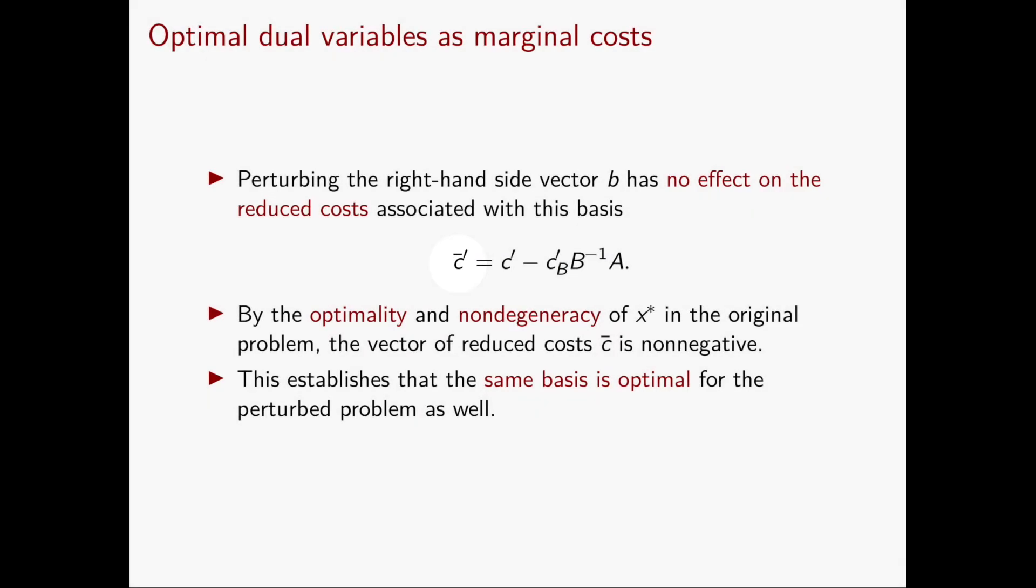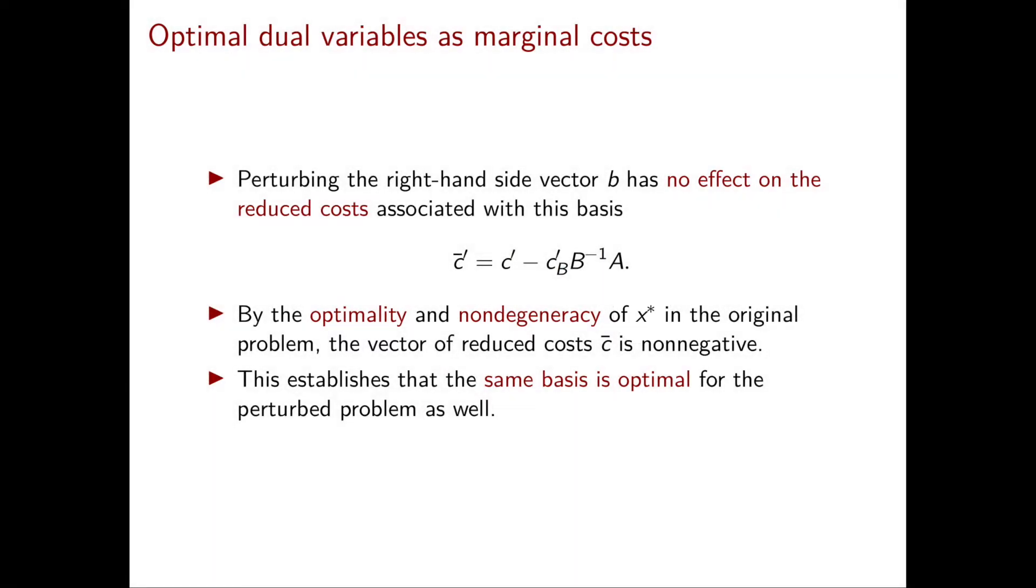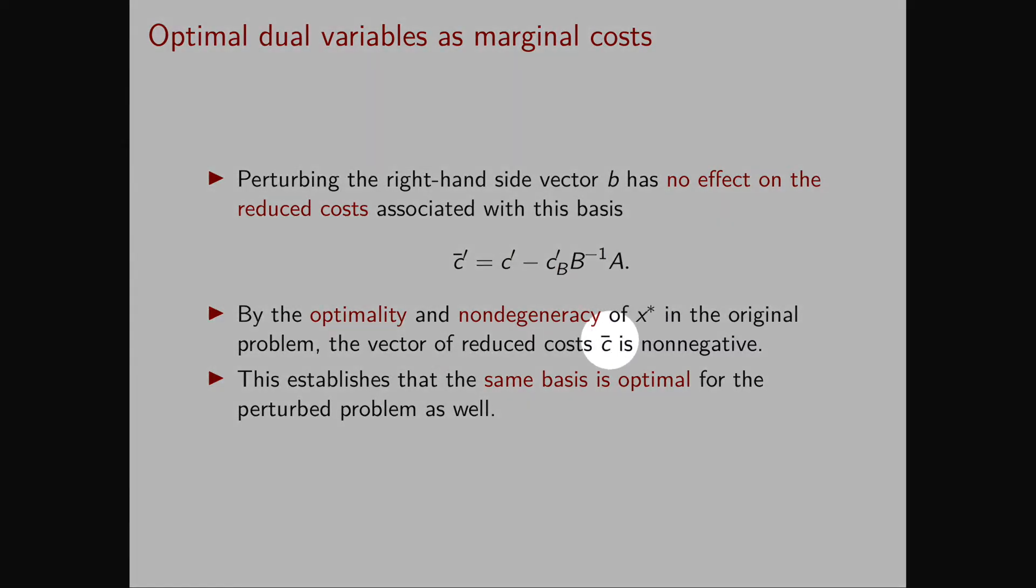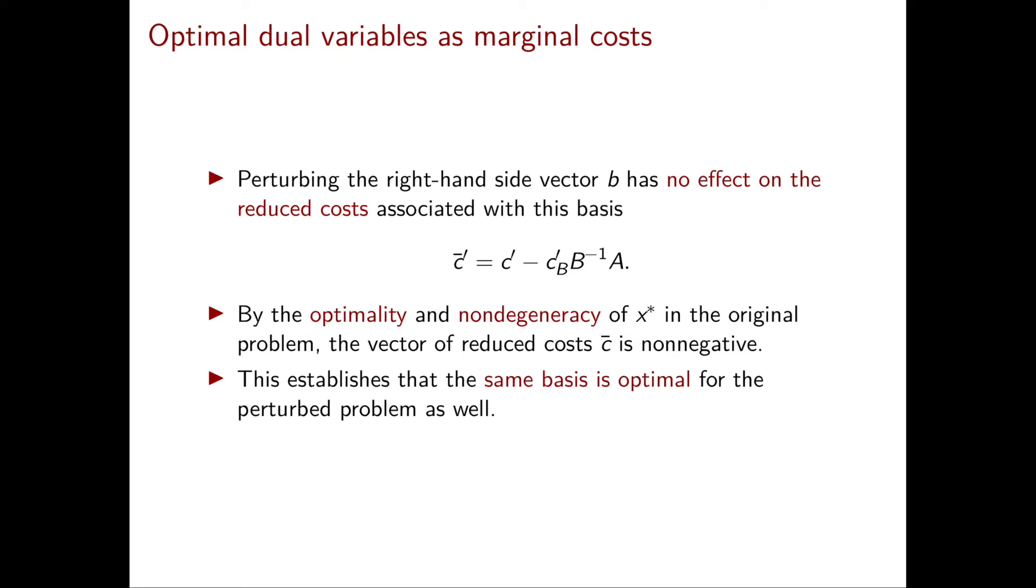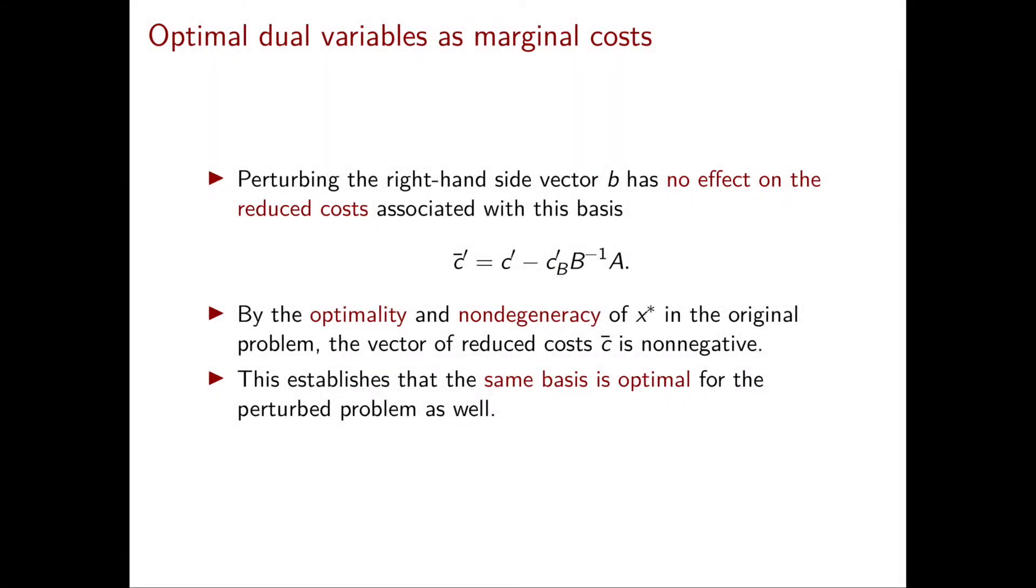So these reduced costs are exactly the same before and after the perturbation. Since our original optimal solution X-star was optimal and non-degenerate, then in the original problem, the reduced costs are all non-negative. So we've understood that the reduced costs are non-negative also after the perturbation. Hence, our basis B is still optimal for the perturbed problem.